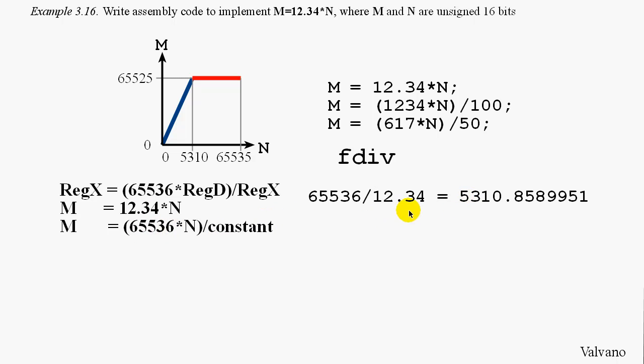So, to find that constant, we take 65536 divided by 12.34 and get a number that looks like this, 5310.85. And we're going to approximate the 5310.85 by 5311.